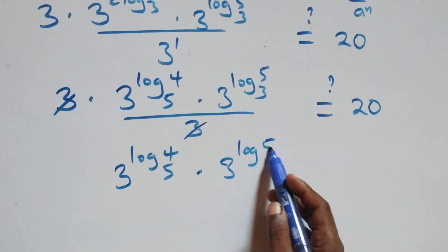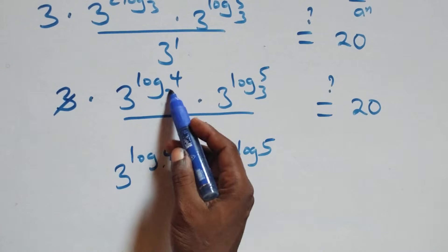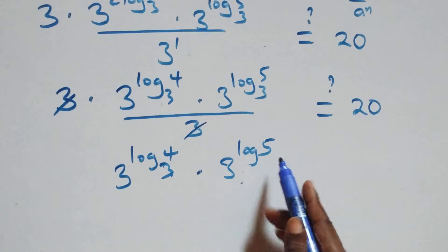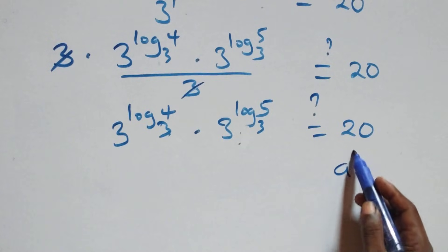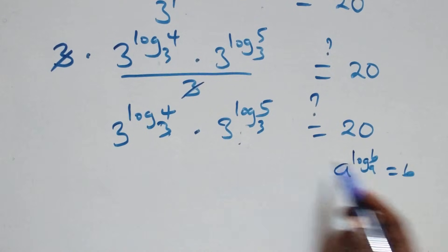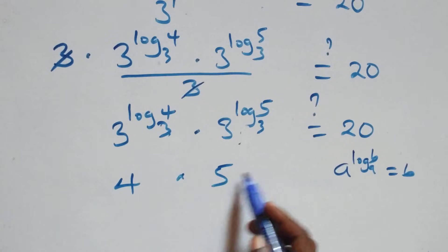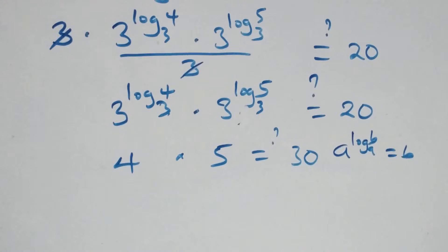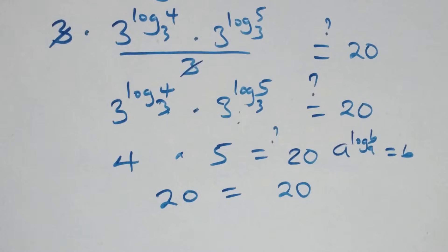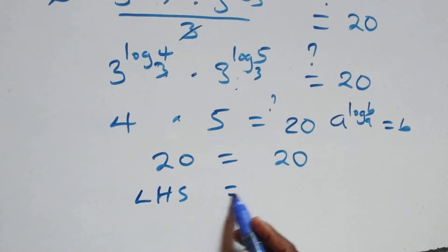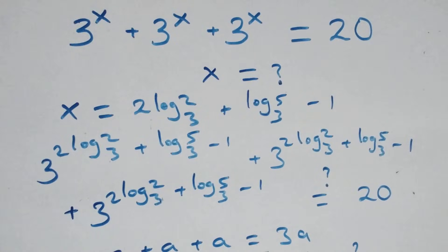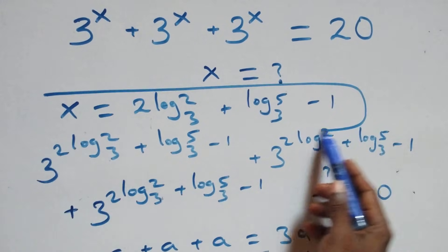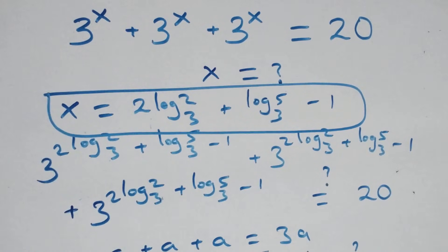Using the rule that a raised to power log b to base a equals b, we have 4 times 5 equals 20 on this side. And here 4 times 5 is 20, which equals 20. That is, we have left hand side equals right hand side, and therefore we conclude that x equals to 2 log 2 base 3 plus log 5 base 3 minus 1 satisfies the given problem.